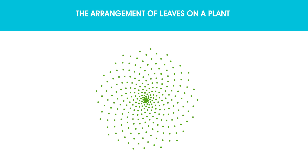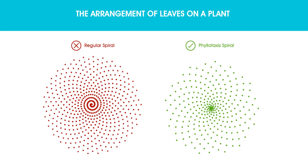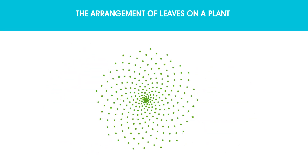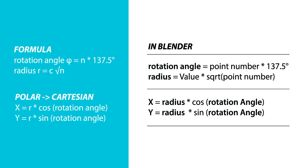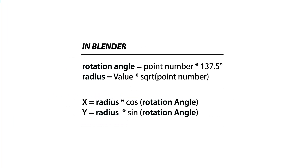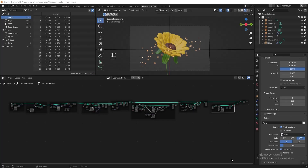In the real world, plants actually grow in a phyllotaxis spiral shape. So instead of using a regular spiral to get the points we need, we are supposed to use a phyllotaxis spiral. In order to get the phyllotaxis spiral in Blender, we have to follow this formula. First we have to find out the rotation angle and the radius, then after we get those we need to calculate the position of the point for the x and y axes. Let's go to Blender.